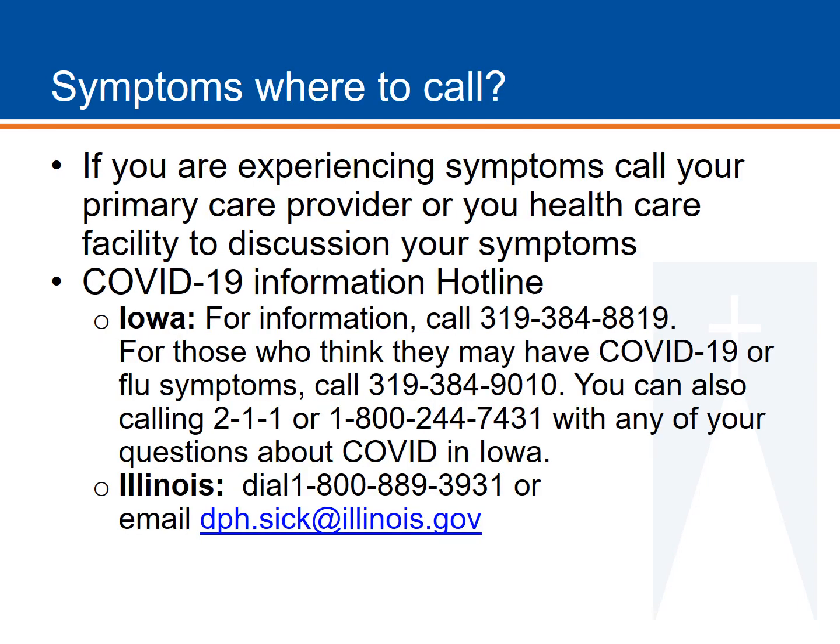Where to call if you have symptoms or need more information: there are two hotlines, one for Iowa and one for Illinois, linked here. The University of Iowa has also established numbers within the university's health systems. These numbers are for those of you to call if you think you are experiencing symptoms — they can help triage you into services. Please be safe, everyone, and don't hesitate to reach out. Thank you.